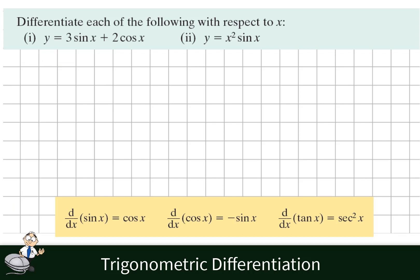It says that the derivative of sin x is cos x, cos x is negative sin x, and the derivative of tan x is sec squared x.